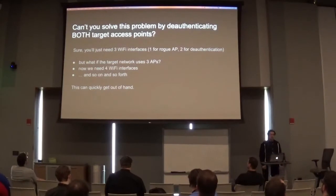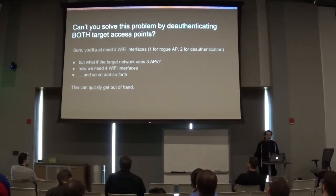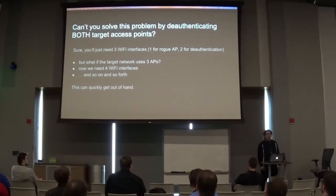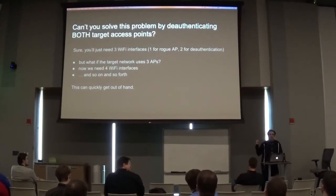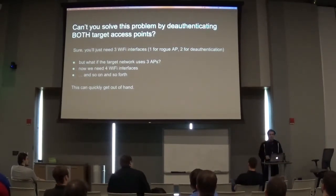Well, sure, but now you need three WiFi interfaces. You need one for the rogue AP, one to do the first deauthentication, and one to simultaneously deauthenticate the second access point. Not a big deal — you just plug three WiFi adapters in. But what if they have three access points? Now you need four interfaces. What if they have four? And this keeps going. Think about a place like this — how many APs are in the room? Unless you're that guy with the WiFi cactus backpack, you're not going to have enough dongles to make this work.